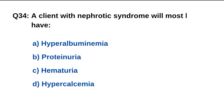Question number 34. A client with nephrotic syndrome will most likely exhibit what finding? The right option is B: Proteinuria.